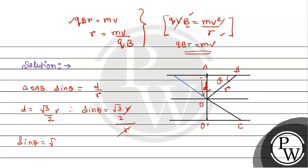Therefore sin θ equals root 3 upon 2R divided by R, so R cancels and sin θ equals root 3 by 2. Therefore θ equals 60 degrees. That means this is the theta angle — this angle is 60 degrees. Using alternate angles, this angle is 90 degrees and the alternate angle is 30 degrees.